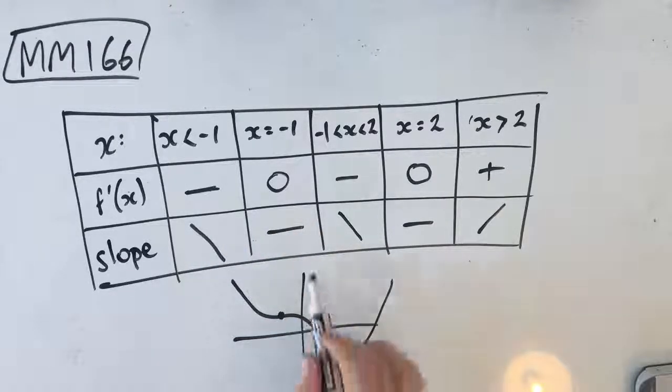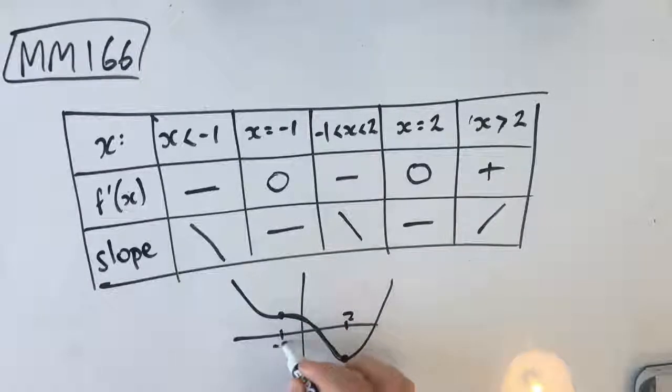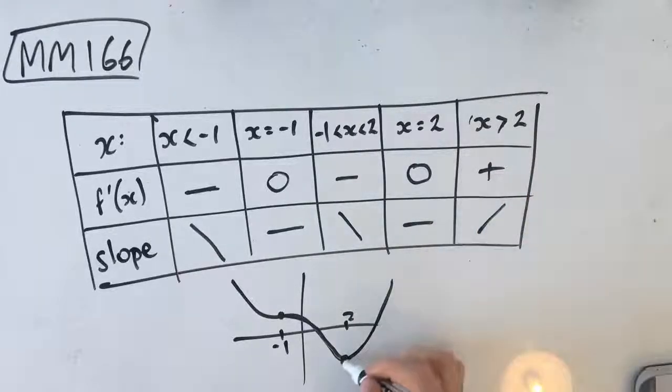Then at negative 1, it flattens out here. Then it keeps going down, keeps going down, flattens out at x equals 2, and then is positive from 2 onwards. So it goes up like that.